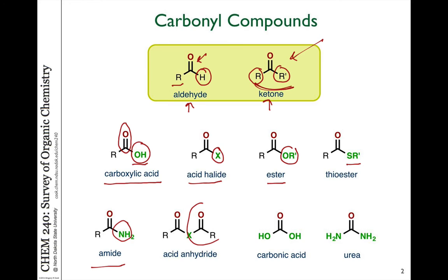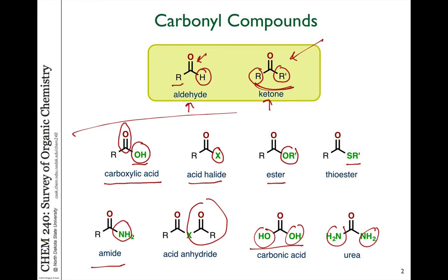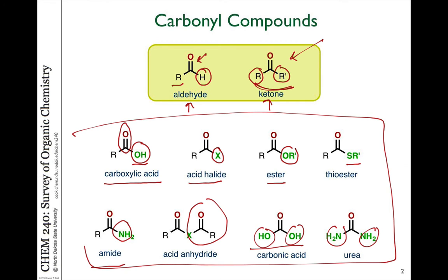Acid anhydrides have another acid group, and they can even have more than one of those groups. Carbonic acid has two OH groups. Urea has two NH2 groups. We're going to talk about these classes of carboxylic acids and their derivatives in the next chapters.